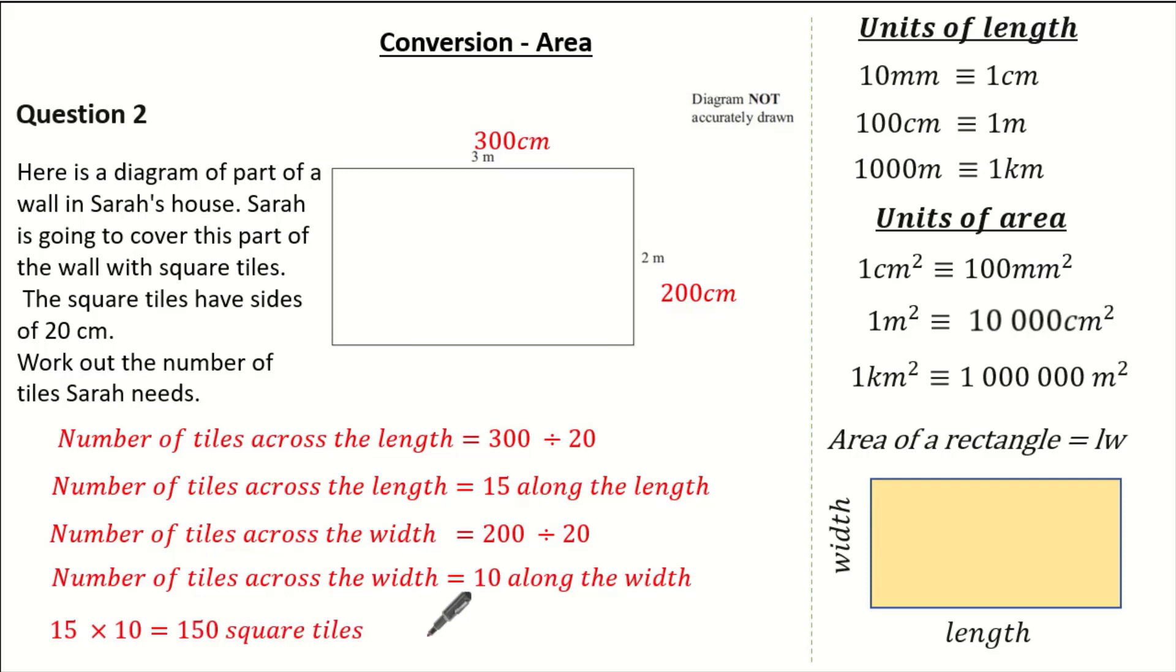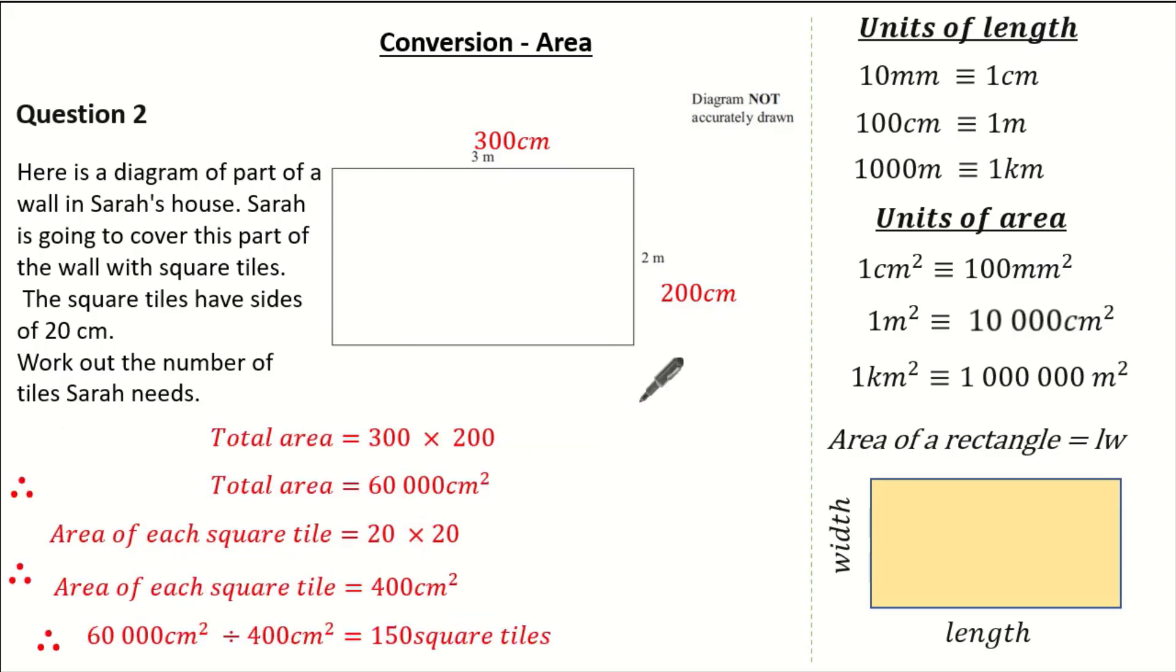Now I'm going to show you another way. An alternative way would simply be to work out the area. Well, we know the total area of Sarah's wall is 300 times 200, which is 60,000cm squared. We know the area of each tile can be found by 20 times 20, which is 400cm squared.